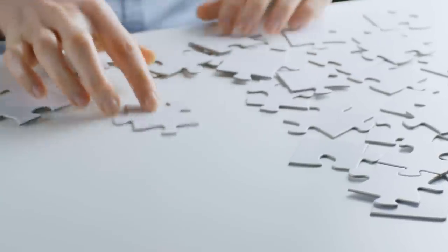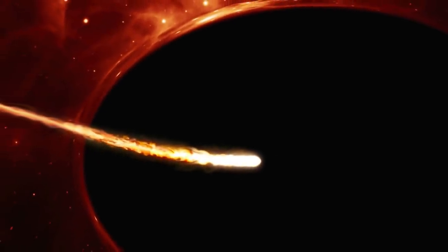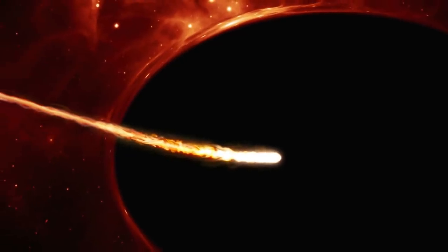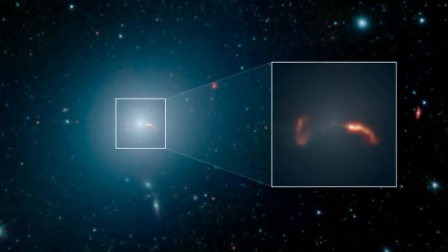We are getting clues though as to what some of them might be. For example, in 2014 the object known as G2 entered a period of its orbit where it was the closest to the black hole. And when that happened, some observations were made.